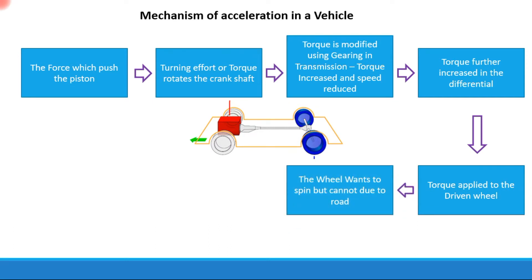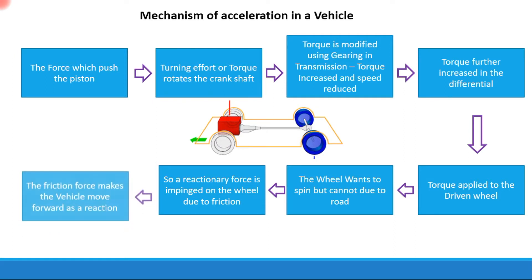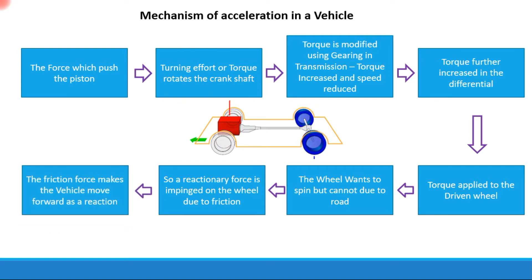The wheel then wants to spin, but it cannot due to the road — this is the condition when the vehicle is standing still. The wheel wants to spin because torque is being applied by the differential onto the wheel, but the road does not allow it to spin freely. As a result, a reaction force is applied on the wheel due to friction between the tire contact patch and the road.